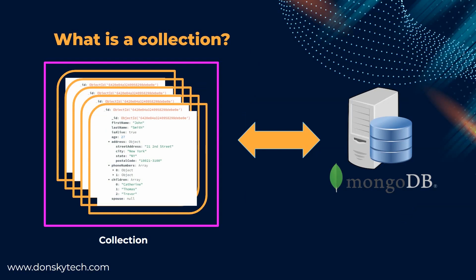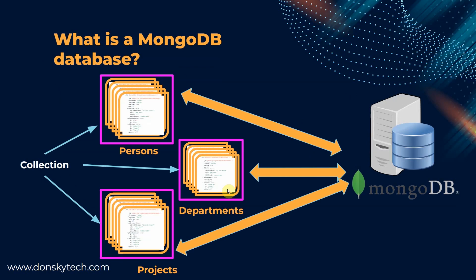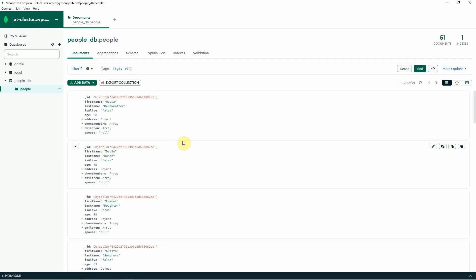Let's now go to the concept of a collection. A MongoDB collection is similar to or analogous to a table in an RDBMS system. If the RDBMS table stores records as a sequence of rows, then a collection stores a series of documents inside it. A MongoDB database, on the other hand, is composed of one or more collections — analogous to how an RDBMS database is composed of multiple tables. In this image, you can see three collections storing person information, department information, and project information.